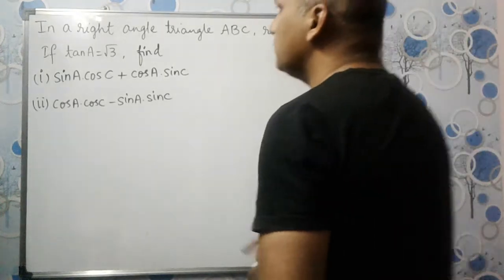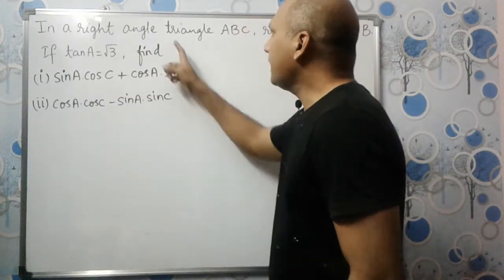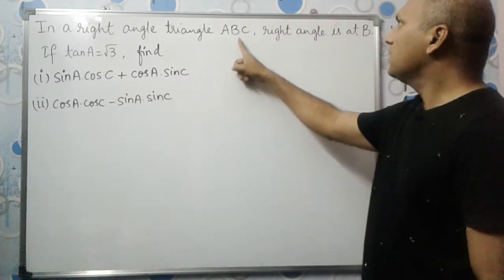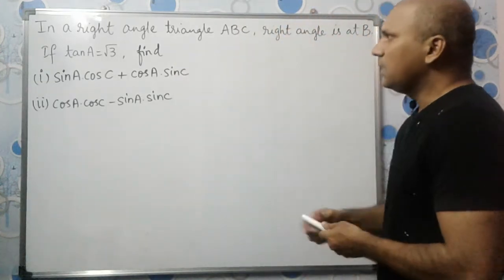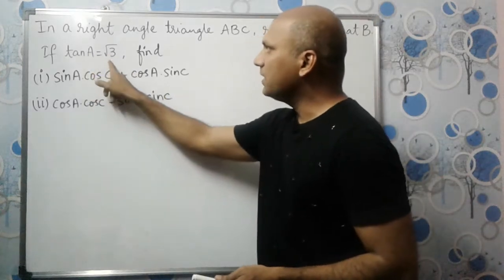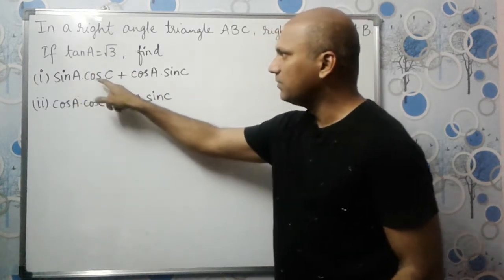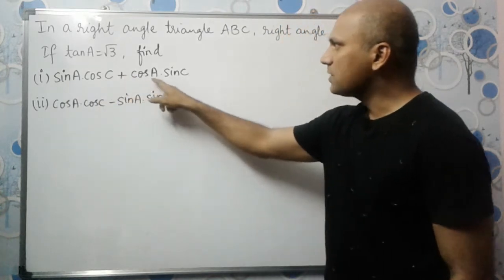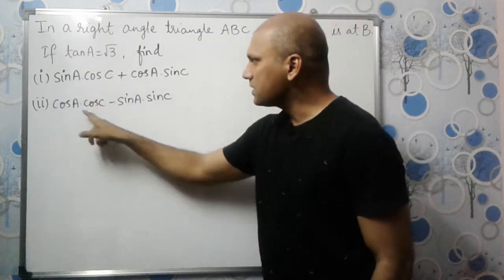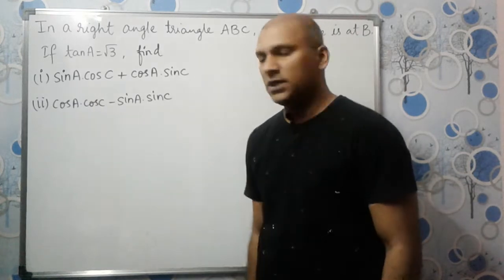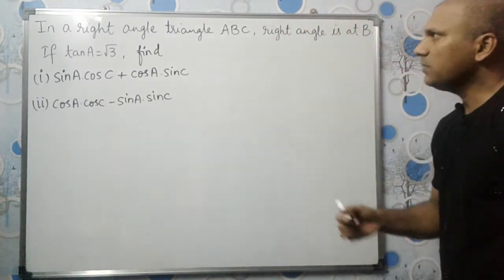Hello students. In this video we will solve a problem from trigonometry. In a right angle triangle ABC, the right angle is at B and tan A is root 3. We need to find two expressions: first, sin A multiplied by cos C plus cos A multiplied by sin C; second, cos A multiplied by cos C minus sin A multiplied by sin C.